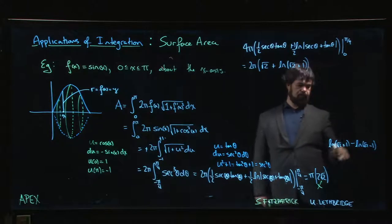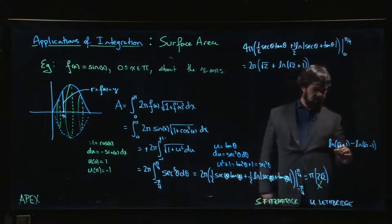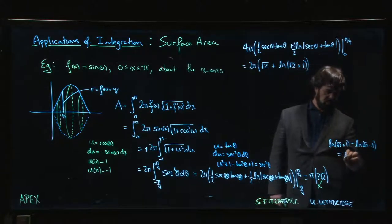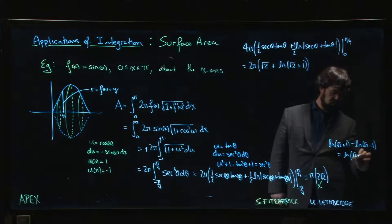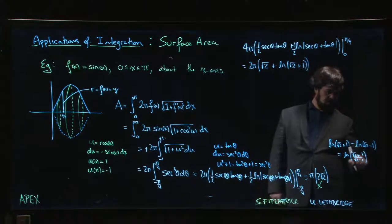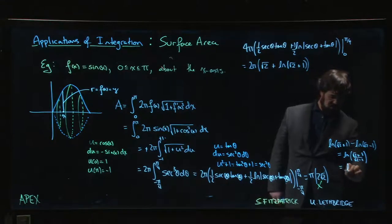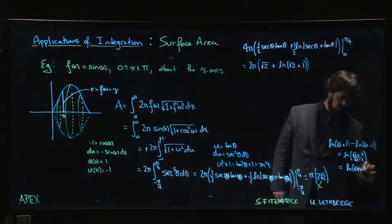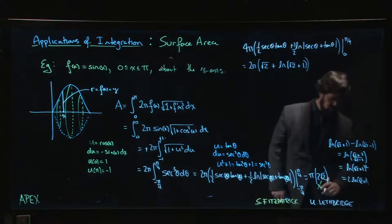The way you reconcile this is using log properties. That's like root two plus one over root two minus one. If you multiply top and bottom by root two plus one to rationalize the denominator, you get root two plus one squared, and that's the same as two times the natural log of root two plus one.